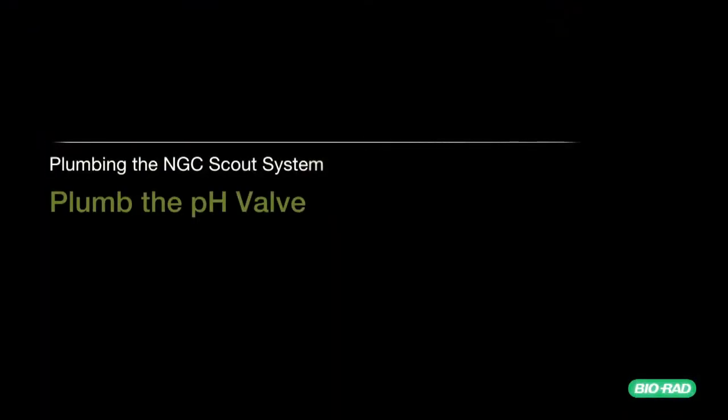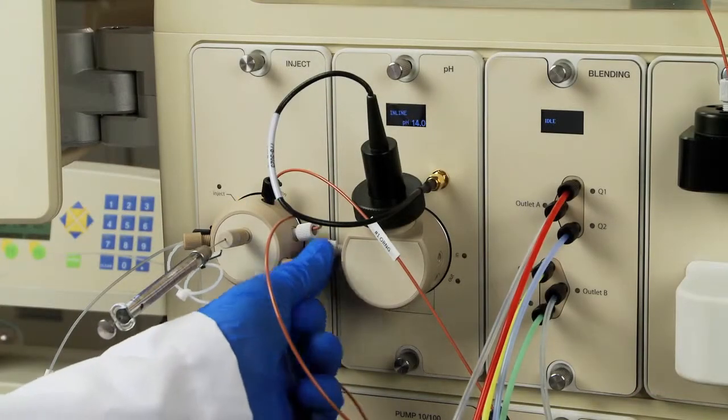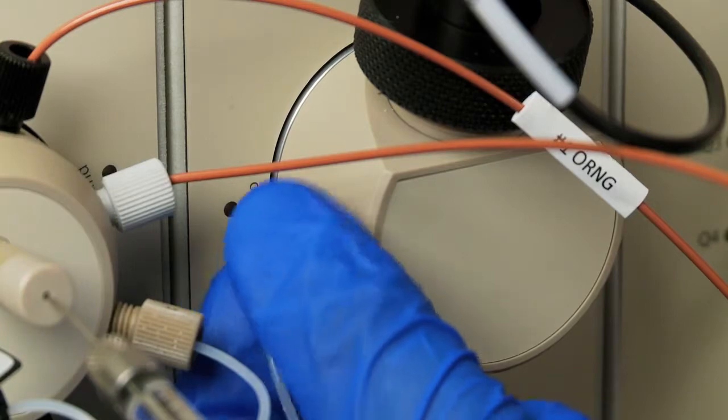Plumbing the pH valve. Connect a priming line to the calibration inlet port labeled CAL IN on the pH valve.